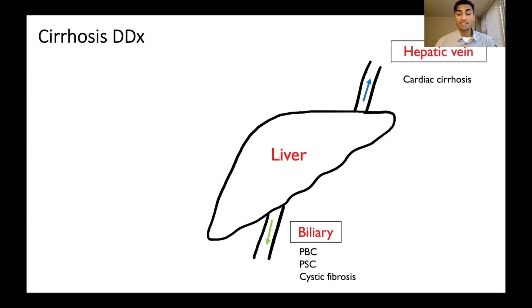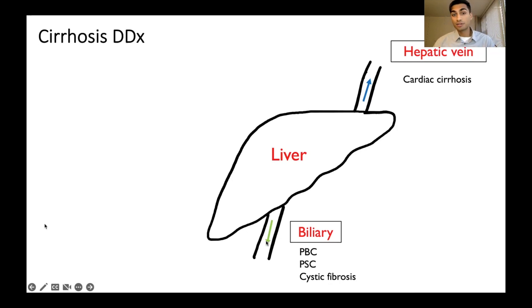With these biliary conditions, you have some sort of damage to the biliary tree system — the bile ducts. Bile backs up into the liver, and this increased pressure can cause damage to the liver, ultimately leading to cirrhosis.